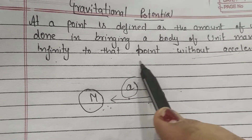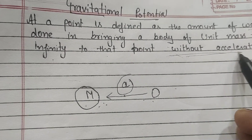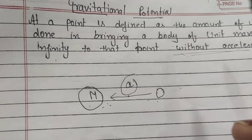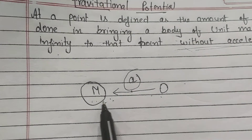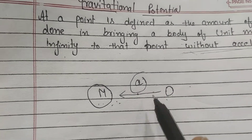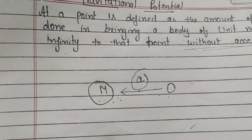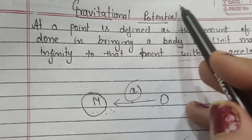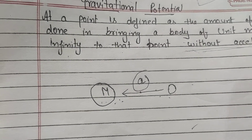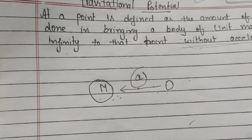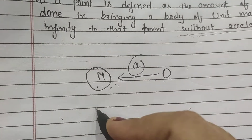Only then will the body move without acceleration. So if we have to take the body from one point to another without acceleration, we have to do some work. That work done stored in the body is known as gravitational potential. So basically, we have to find out the work done in bringing the body from infinity to any point.